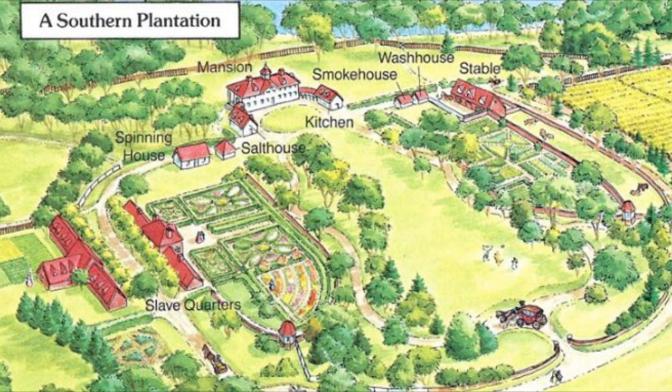It didn't take long before plantations began to dominate the South because they produced cash crops — crops mainly grown to sell on the market. There were areas used to grow food for eating and consumption, but the land was mainly used to grow those cash crops, and the Southern economy depended on them. The common cash crops grown were rice, indigo, cotton, and tobacco, with cotton and tobacco being the most profitable. Cotton really didn't take off until around 1830, when demand grew with its introduction to Louisiana, Alabama, and Mississippi.